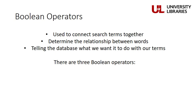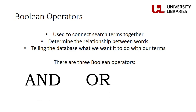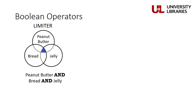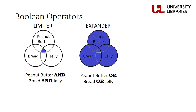There are three Boolean operators: AND, OR, and NOT. AND is a limiter, which means it limits the results you get back fairly narrowly. For example, if I search for peanut butter AND bread AND jelly, I will only get results that include all of these terms — so I would only get results back that feature peanut butter and jelly sandwiches. OR is the opposite — it's an expander. So if I search for peanut butter OR bread OR jelly, I'm saying I would be happy with results that include any of these terms in any combination or on their own, such as peanut butter sandwiches, jelly recipes, bread recipes, jelly and bread sandwiches, and peanut butter and jelly sandwiches.